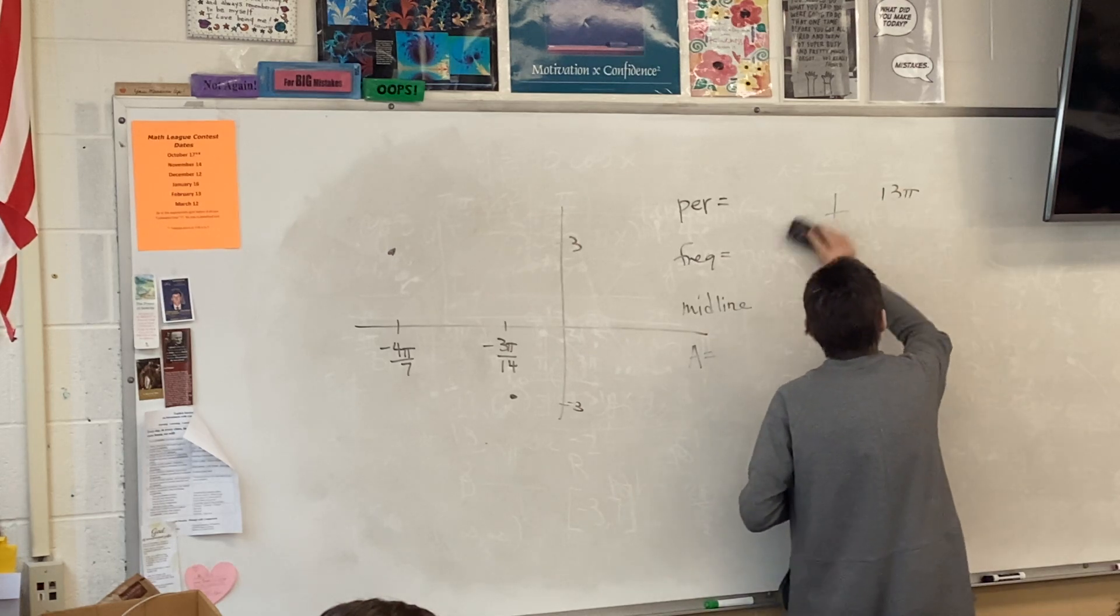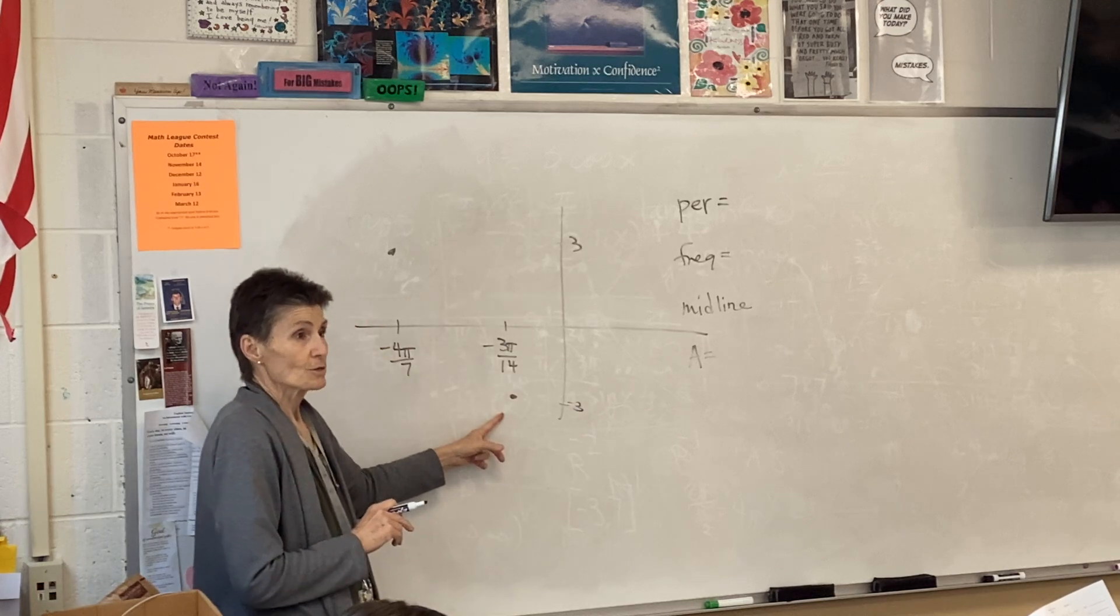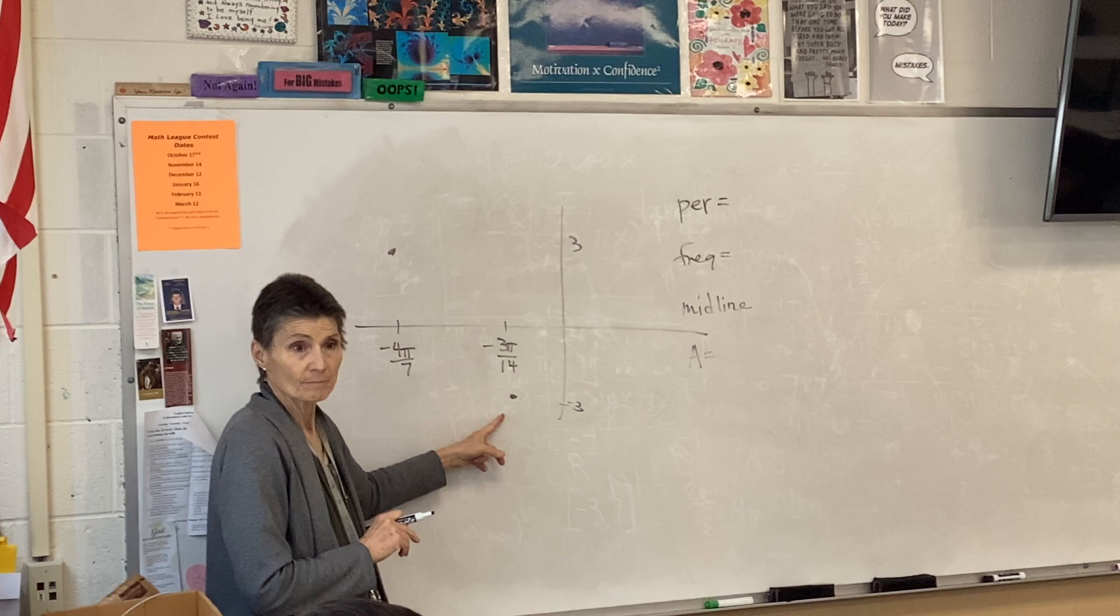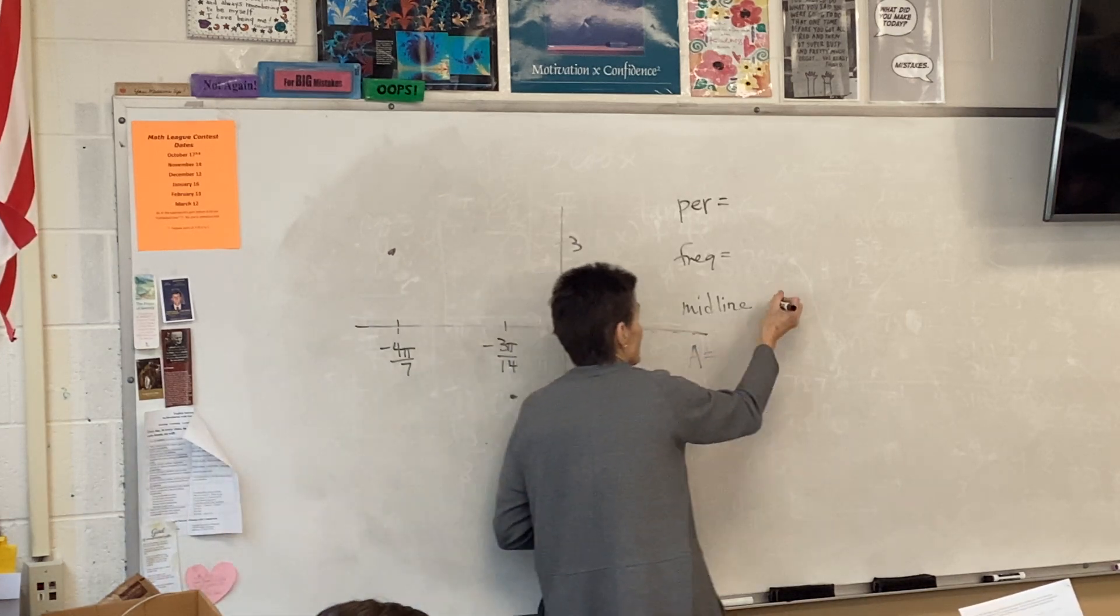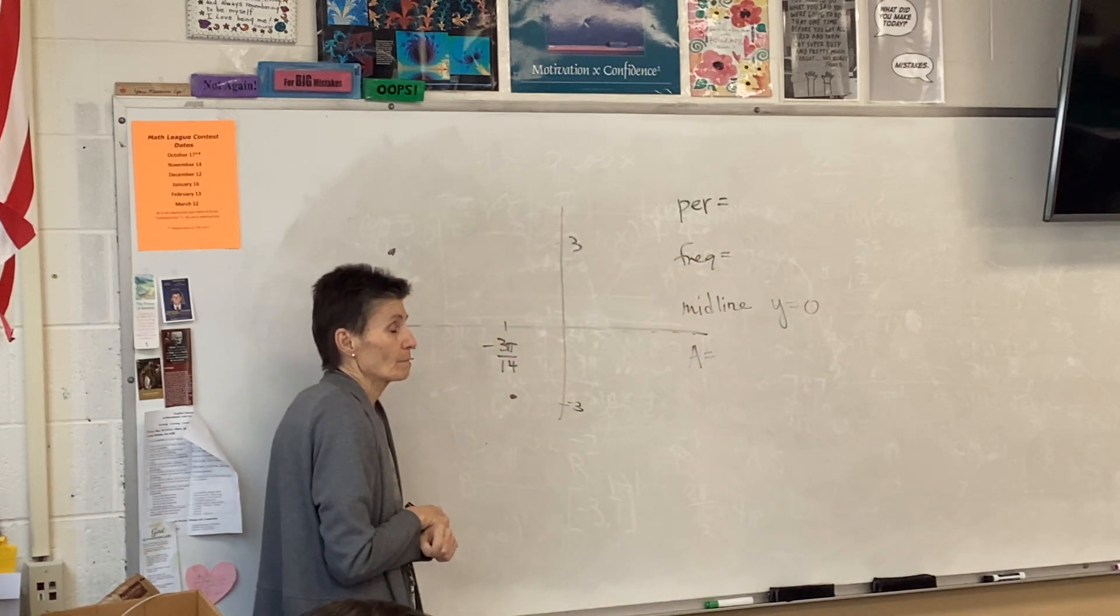Okay, so this is a max and this is a min. So won't the midline be right in the middle? So our midline is y equals 0. Everyone agree with that?